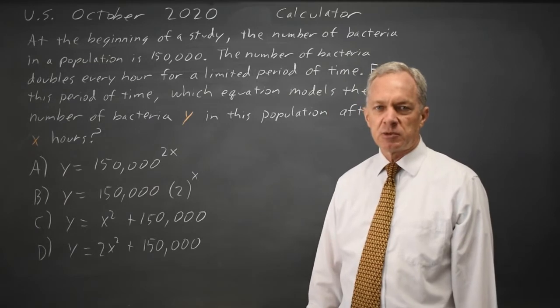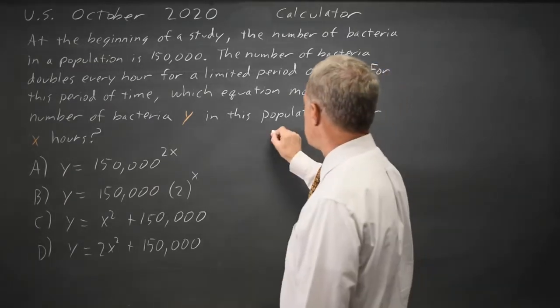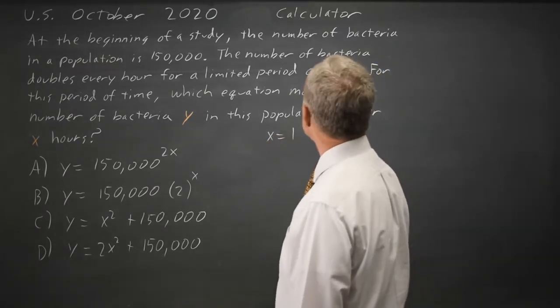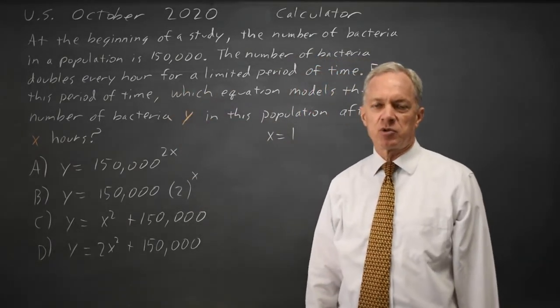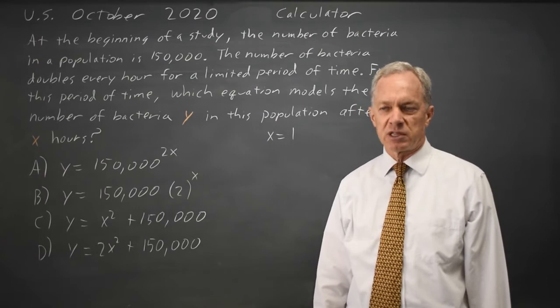One easy way to do this is to substitute in a number. I'm going to use x equals 1. Since the number doubles every hour, after one hour I should have twice as many as I started with, so 300,000.